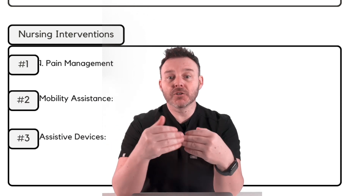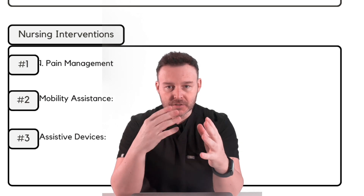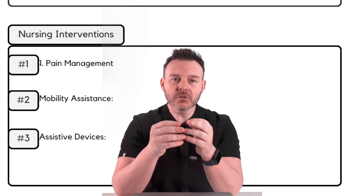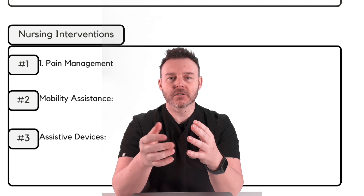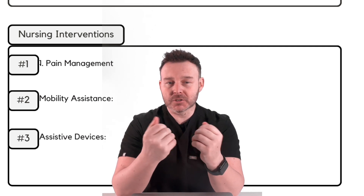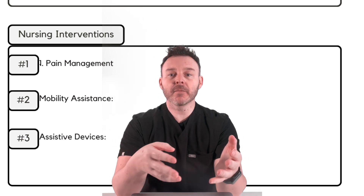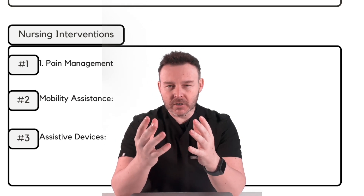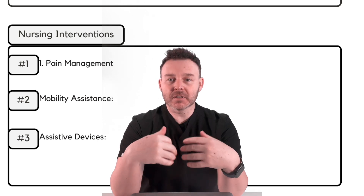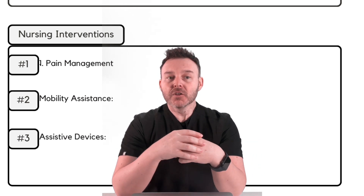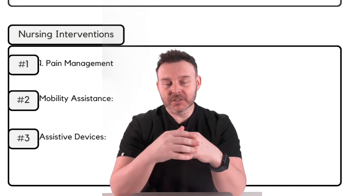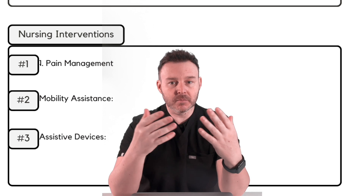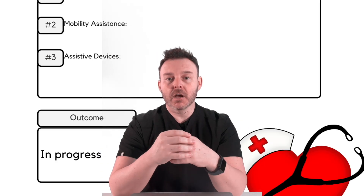We should supervise the patient during their initial use of assistive devices to ensure proper use. Another intervention is psychosocial support — assess the patient's emotional well-being and provide emotional support, encourage family to visit and be involved in care and recovery, and collaborate with the healthcare team to assess for signs of anxiety or depression related to this hospitalization. For our outcome, since we're just developing the initial care plan, this goal is currently in progress.